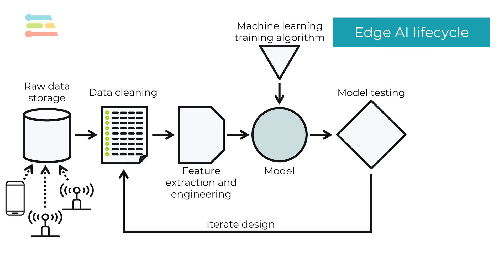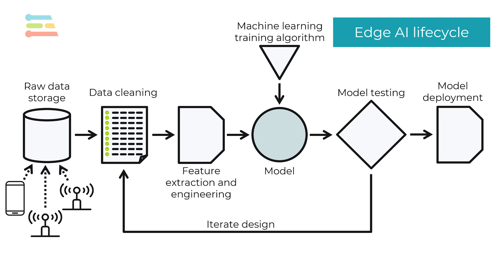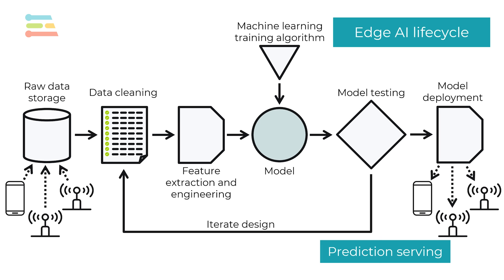Deployment can include developing or updating application code to use the model's insights to meet business or social needs. The model and application are then deployed to your end devices or edge servers to perform inference on real-world input. This act of processing new data in the deployment environment is known as prediction serving.